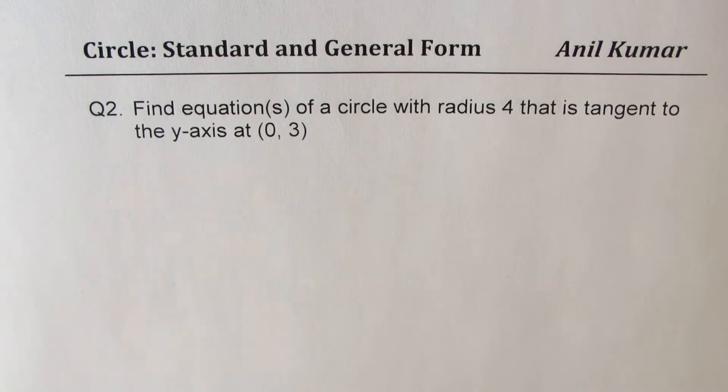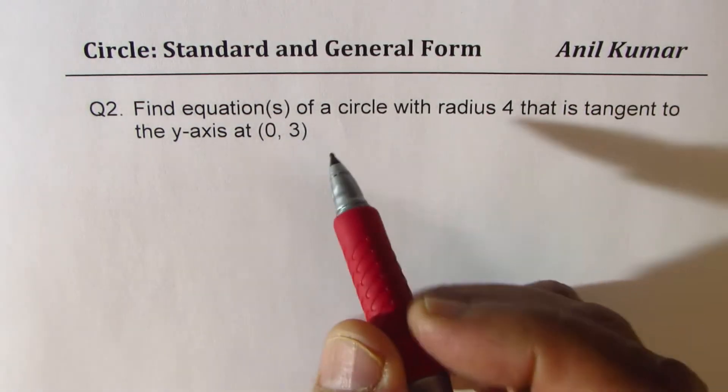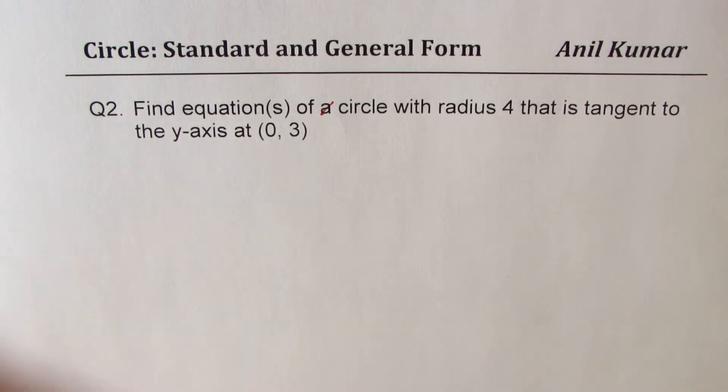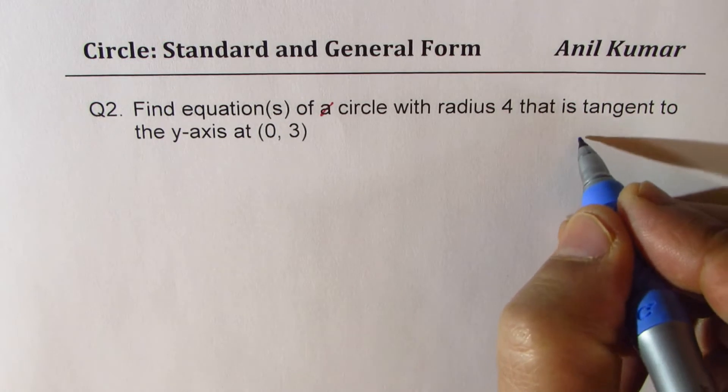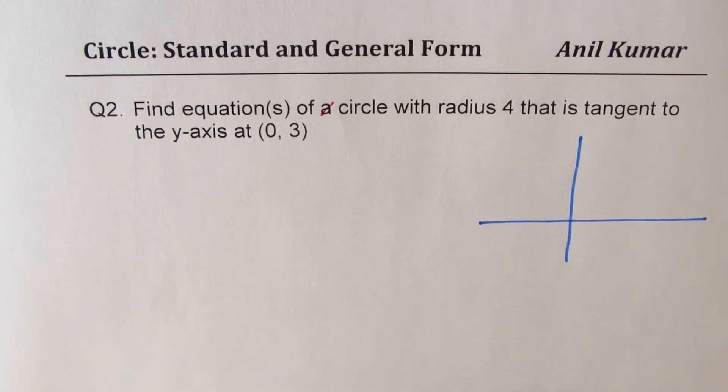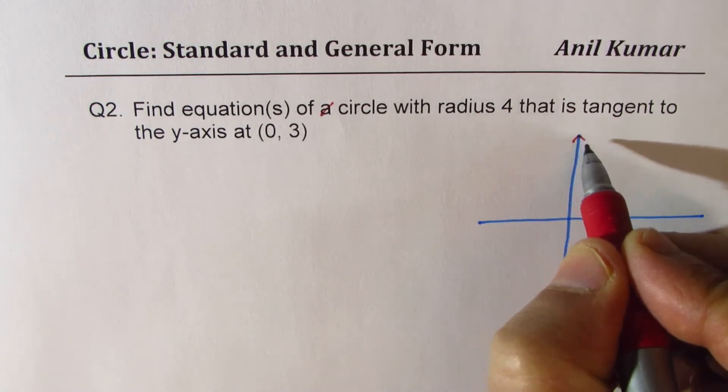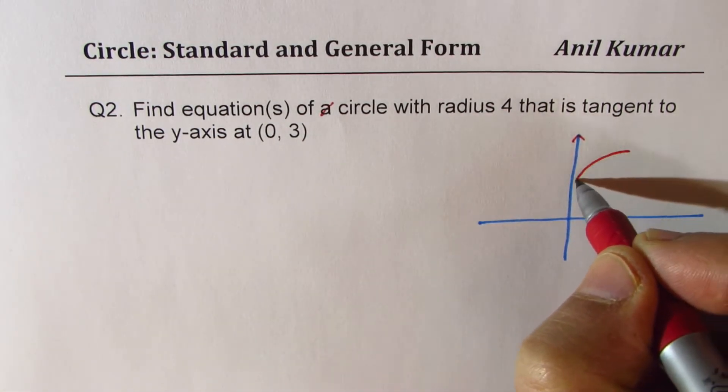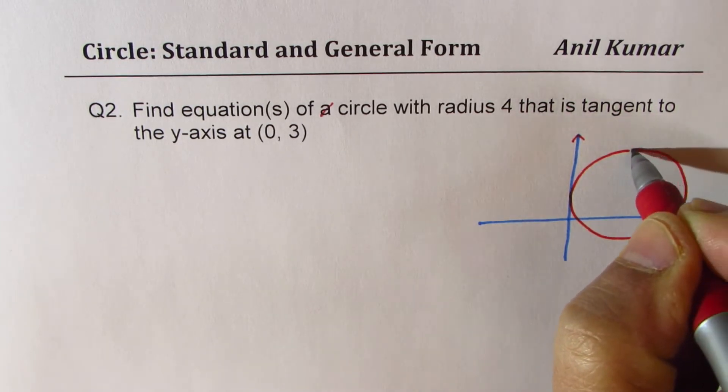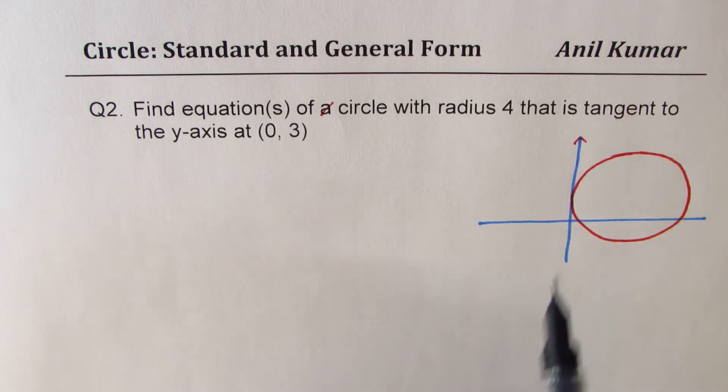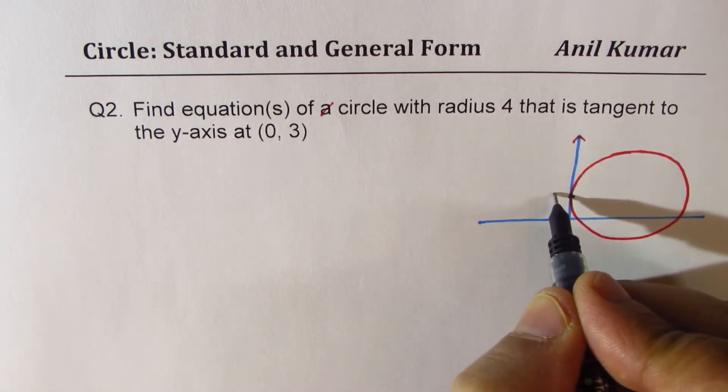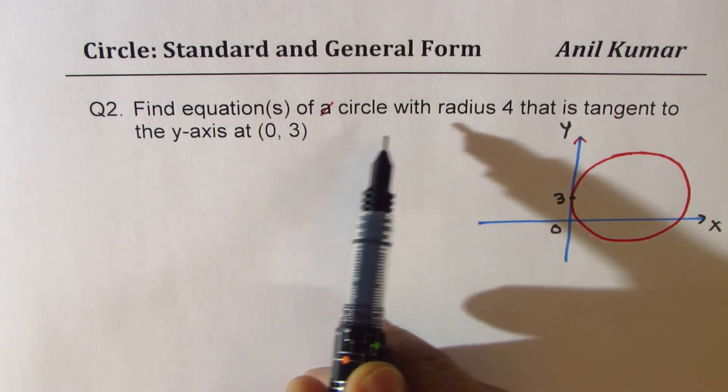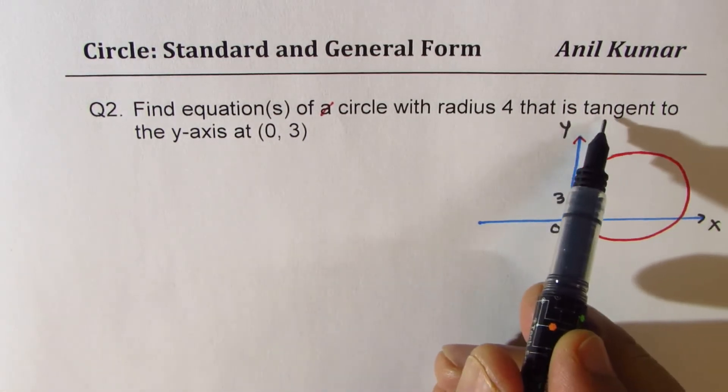Find equations of a circle - so it could be more than one circle - with radius 4, that is tangent to y-axis at (0, 3). So let's try to understand the equation. Now in this case, we are given that y-axis is tangent to the circle, and we are given the point also. So let me make a circle here.